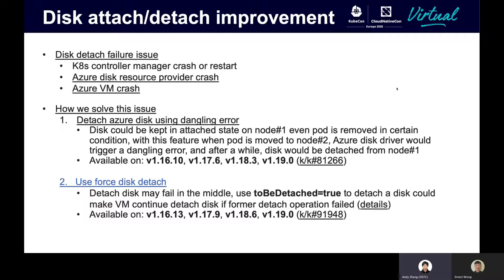We've worked out two methods to mitigate this issue. First, from the Kubernetes side, we would detach Azure Disk using a dangling error approach. Disk could be stuck in an attached state on node 1 even after a pod is removed in certain conditions. With this feature, once a pod is moved to node 2, the Azure Disk driver would trigger a dangling error, and after a while, the disk would be detached from node 1. Second, from the Azure cloud provider side, we have switched to using the force-detach setting to detach an Azure Disk. Sometimes a detach operation may fail midway, putting the VM into a failed state — using the force-detach setting can make the VM continue the detach operation even if a former detach operation failed.